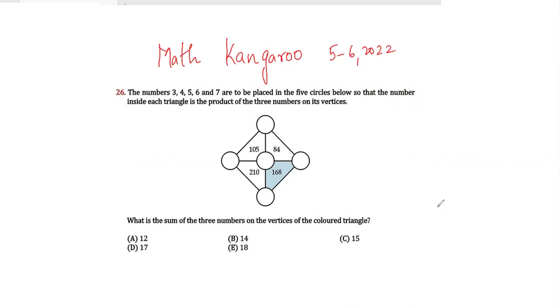What is the sum of the three numbers on the vertices of the colored triangle? Basically, what the question is saying is that whatever digits we put in these three circles, it has to equal 105. Similarly, whatever digits we put in these three circles, they have to equal 84.